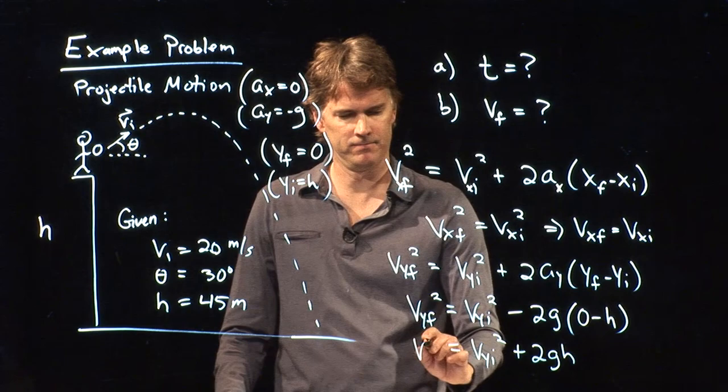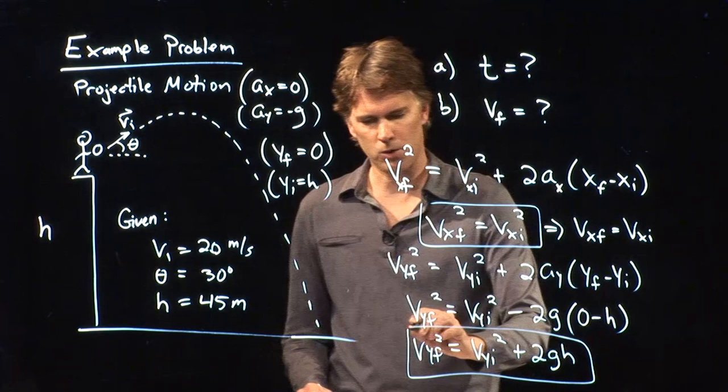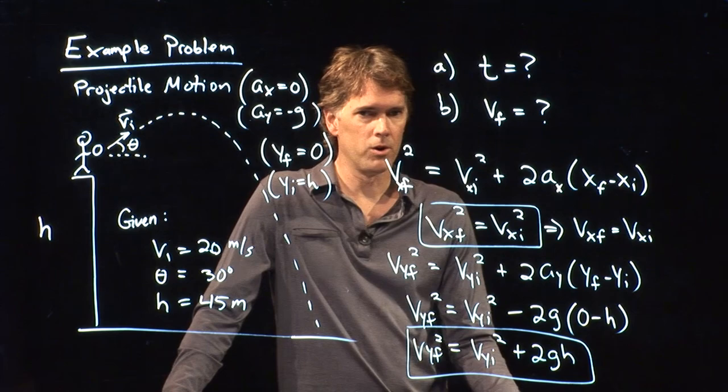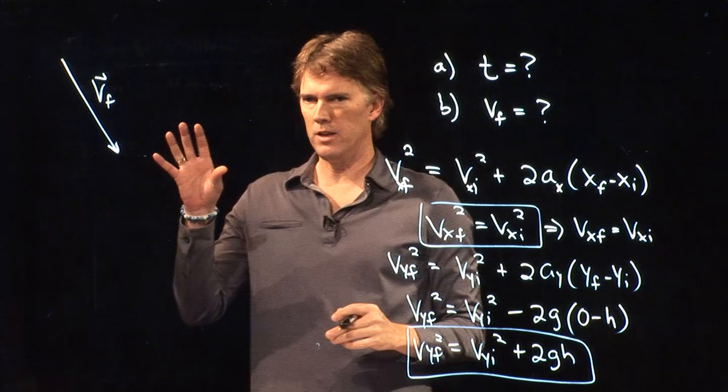So look, I have an equation here for vxf squared. I have an equation there for vyf squared. What we're interested in is v final. How do we do that?